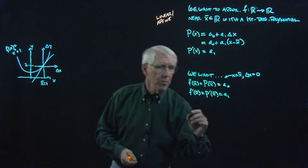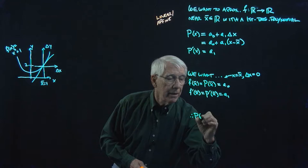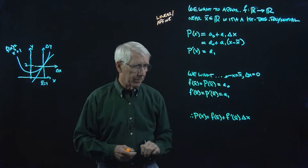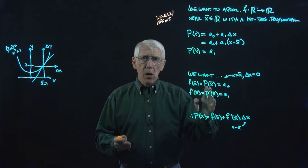So we've got it all figured out. We know what a₀ is, we know what a₁ is — both coefficients. Therefore, we have p(x) equals f(x̄) plus f′(x̄) times Δx, or x minus x̄. So this first-degree Taylor polynomial is our linear approximation near x̄.